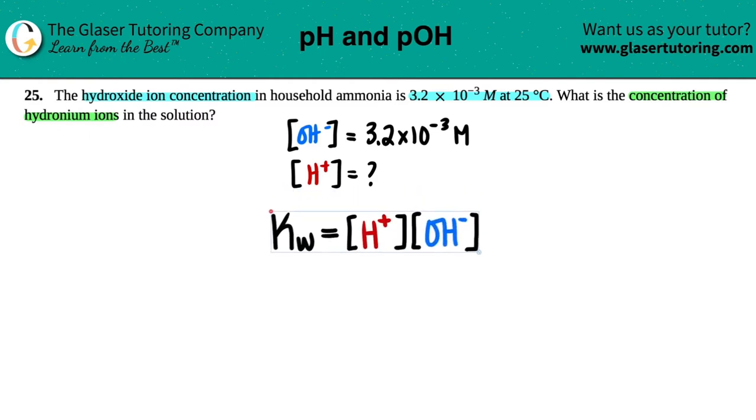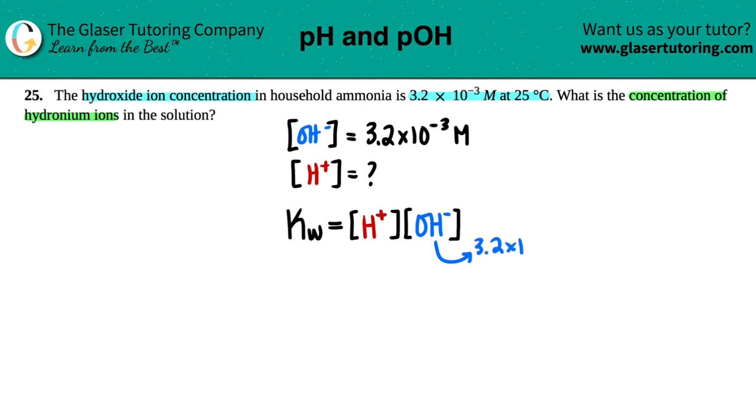Let's just make it big, maybe a little bit too big, but it is the KW formula. KW equals the concentration of H+, times the concentration of OH minus. They did tell us that the OH minus was 3.2 times 10 to the negative 3 molarity.